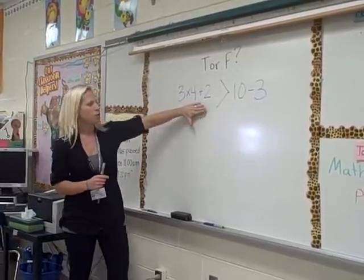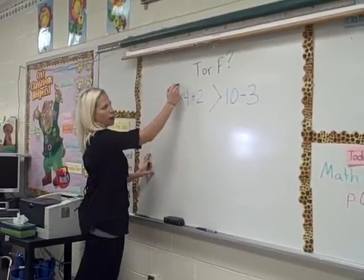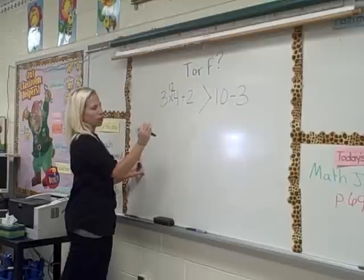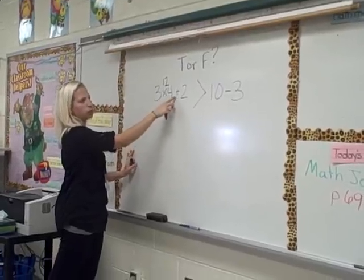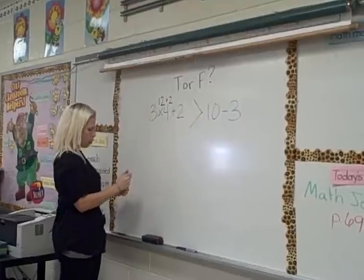So I'm going to start here and solve the first section. 3 times 4 is 12. Make sure you're writing your work so you can see where you're getting the answer. 3 times 4 is 12, plus 2 is 14. So here I've got 14.